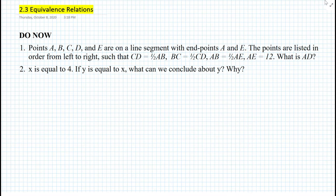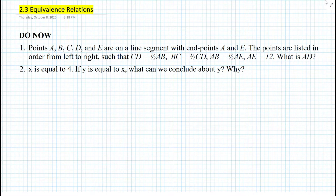For the do now, number one, we have the following. Points A, B, C, D, and E are on a line segment with endpoints A and E. The points are listed in order from left to right, such that the distance between points C and D is equal to one-half the distance between points A and B. Then the distance between points B and C is one-half the distance between points C and D, and the distance between points A and B is equal to one-half the distance between points A and E, and the distance from points A to E is equal to 12. What is the distance between points A and D?